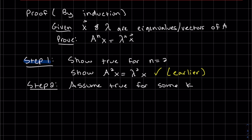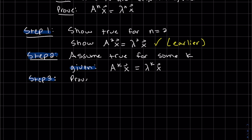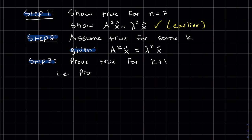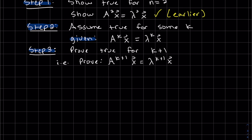So we're assuming true for some k, and it is a k less than n. So basically we're going to write out our given here. A to the k x is equal to lambda to the k x. We want to prove true k plus 1. So to prove this, we're going to show that the left-hand side equals the right-hand side. So we're going to start with the left-hand side and transform it to the right.